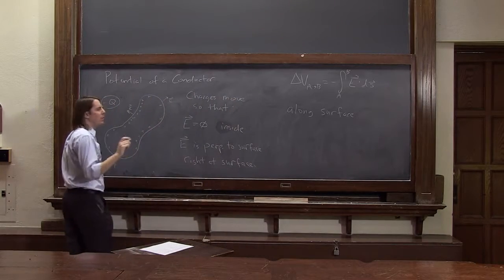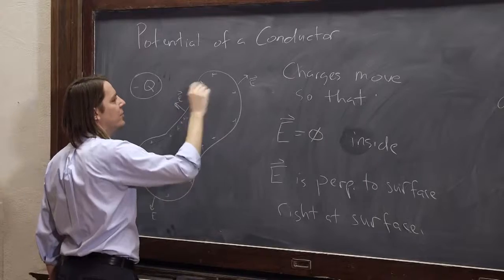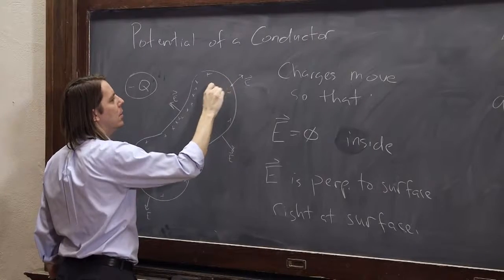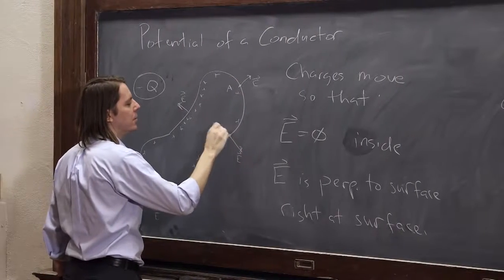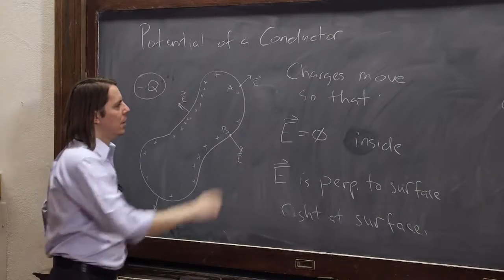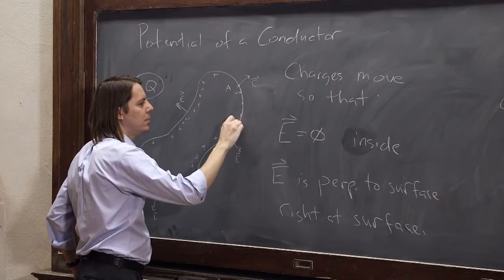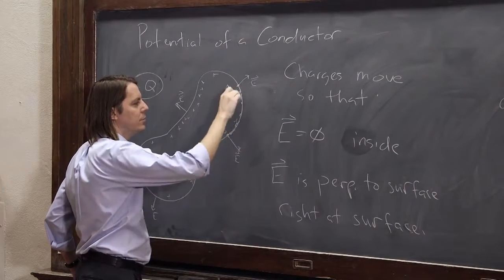if we put our a and our b on the surface, say we start here and we go to here, our little ds's are always going to be in the surface because we do that integral, right? There's your ds's there,